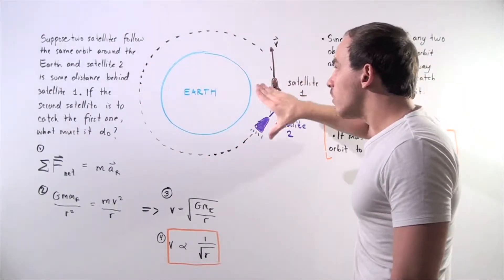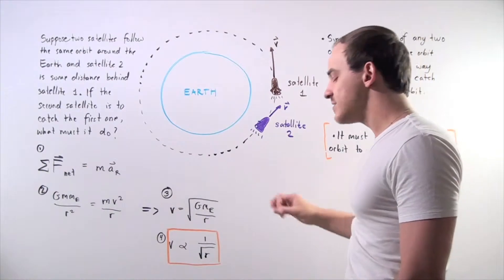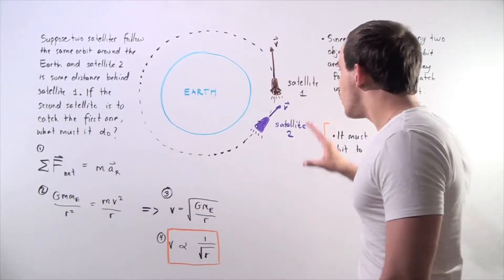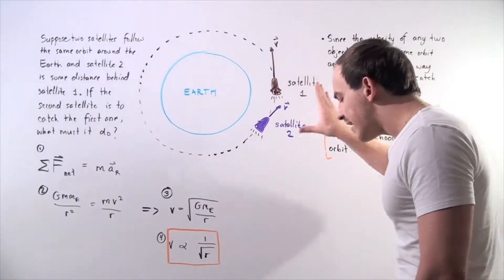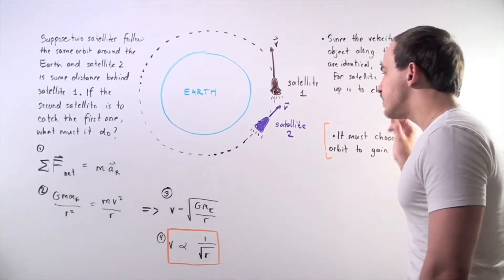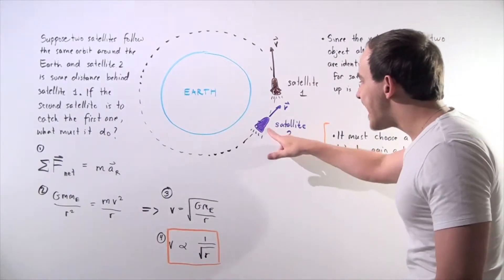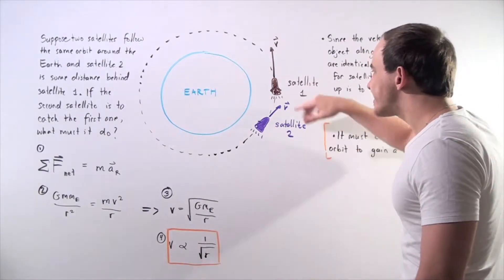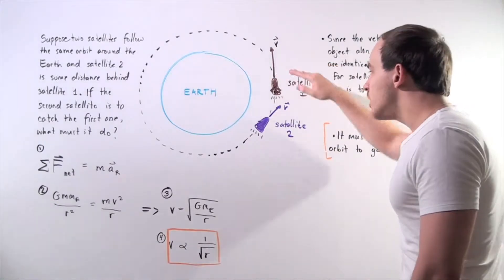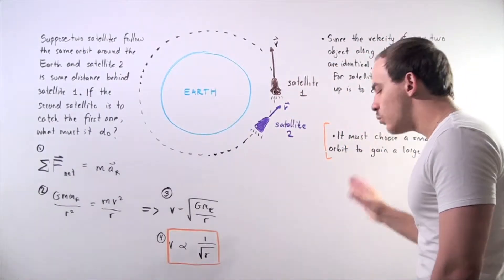The orbit of these two satellites is exactly the same. These two satellites have the same exact mass, and satellite 2 is slightly behind — some unknown distance behind satellite 1.